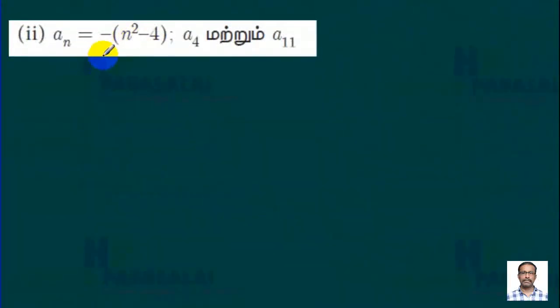Problem (ii): aₙ = -(n²-4). We need to find a₄ and a₁₁. For a₄, we substitute n=4: a₄ = -(4²-4) = -(16-4) = -12.